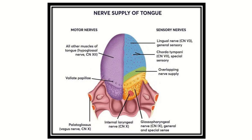Here we can see the sensory and motor areas of the tongue. On the motor side, all muscles are supplied by the hypoglossal nerve except the palatoglossus, which is supplied by the vagus nerve. On the sensory side, the anterior two-thirds receives general sensation via the lingual nerve and special sensation via the chorda tympani of the facial nerve.